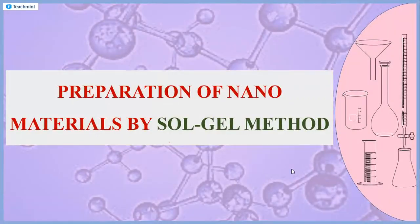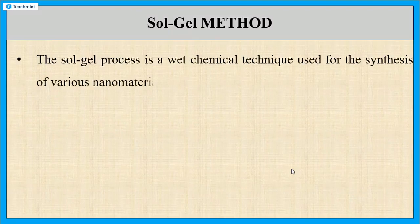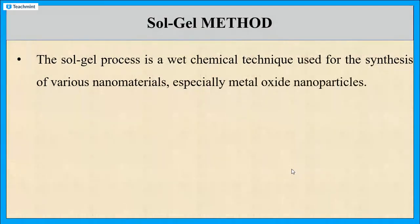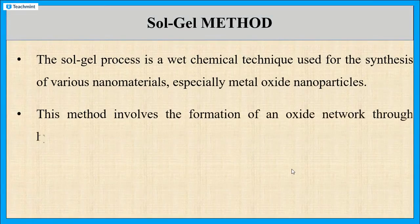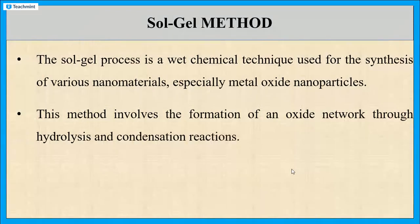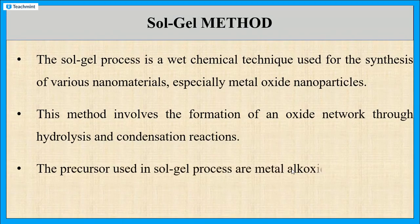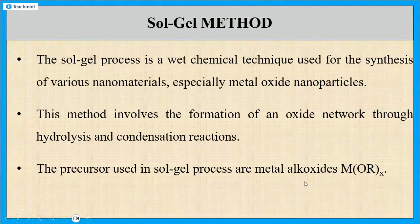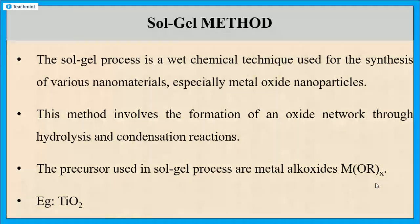In this session, let us discuss the preparation of nanomaterials by using the Sol-gel method. Sol-gel method is a wet chemical technique used for the preparation of a variety of nanomaterials, especially metal oxide nanoparticles. This method involves the formation of an oxide network through two chemical reactions: hydrolysis and condensation. The starting material or precursor used in this process is metal alkoxide, represented as M(OR)x. The most common example of nanomaterials obtained by the Sol-gel method is titanium dioxide.